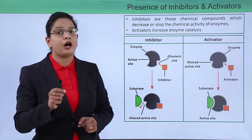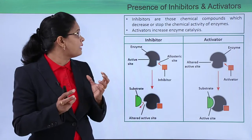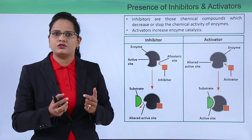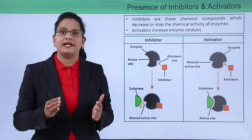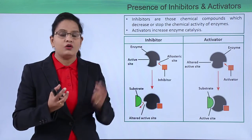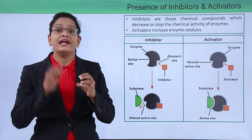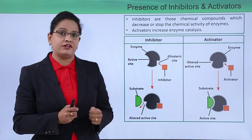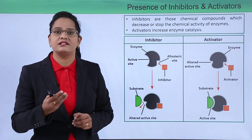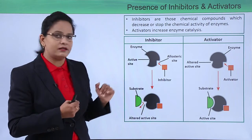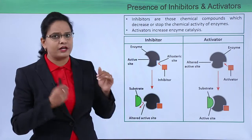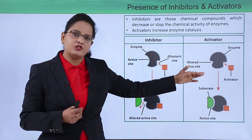Inhibitors are compounds that decrease or completely stop the reaction. Various drugs made to cure infections affect enzymatic action directly — they inhibit enzyme activity. Activators, on the other hand, increase enzyme activity, just as inhibitors decrease it. Activators can be cofactors and coenzymes. As shown in the diagram, an inhibitor molecule can bind to some other site or to the active site, while an activator binds and makes the active site more suitable for substrate attachment.